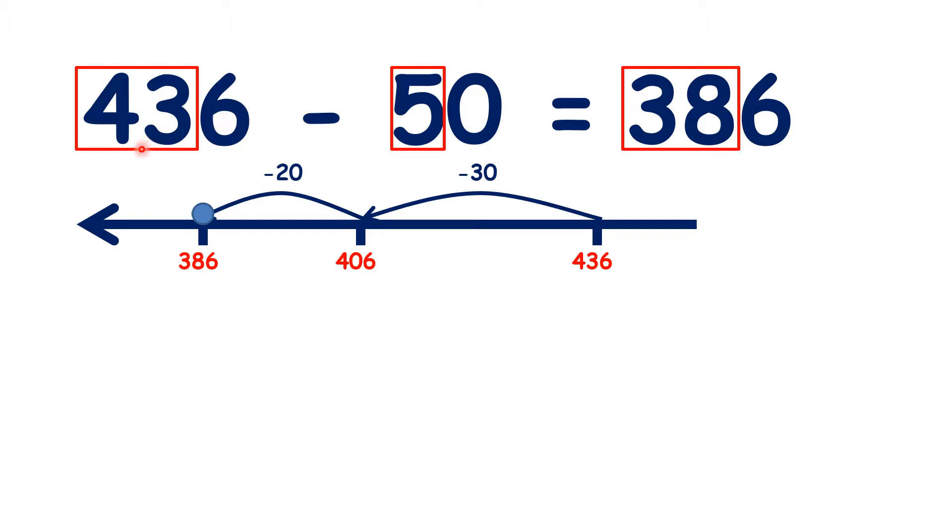So if you know that 43 minus 5 is 38, you know that 436 minus 50 is 386. Because we're only subtracting tens, the units digit stays the same.